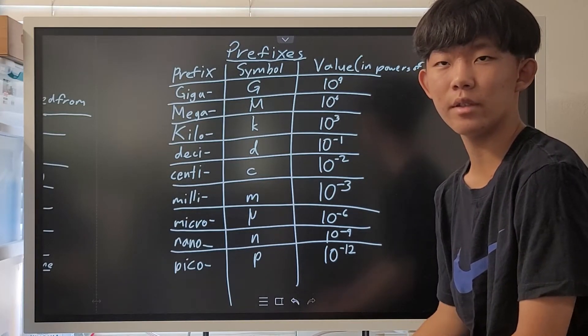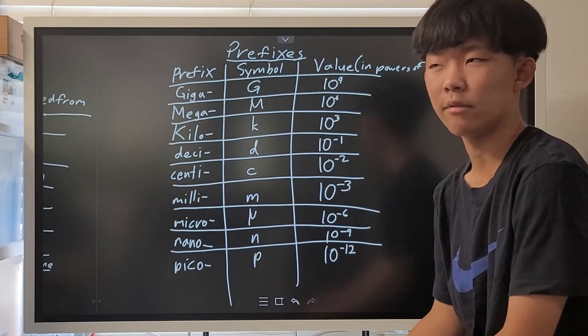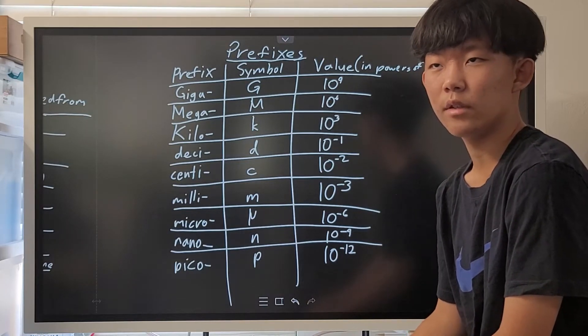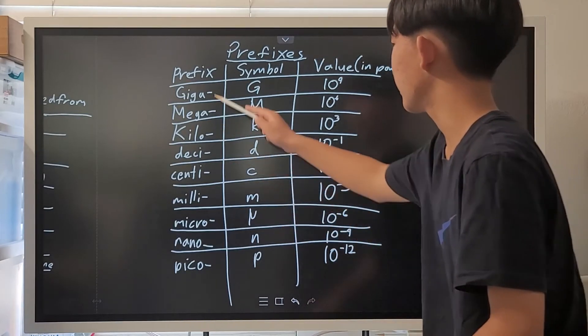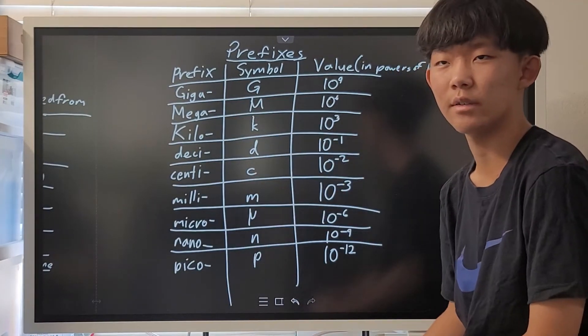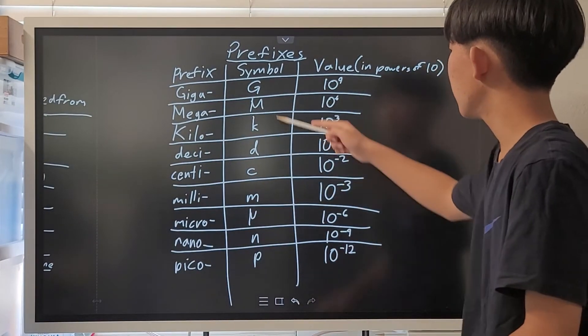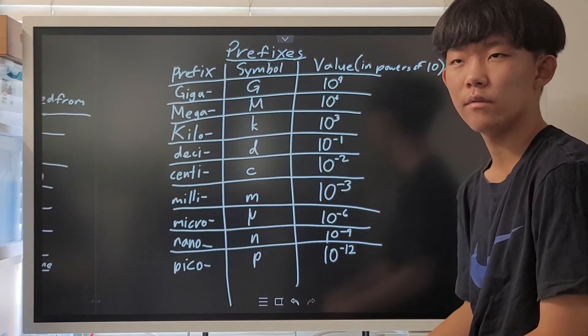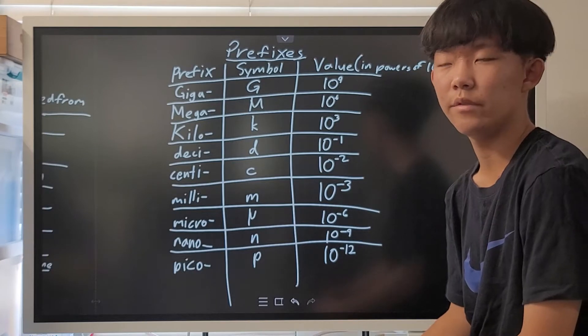Again, this is not true for customary units though, so if you encounter a customary unit, don't put something like giga in there because it's just going to sound weird. Here are all the prefixes, symbols, and power of 10 values for very common prefixes.